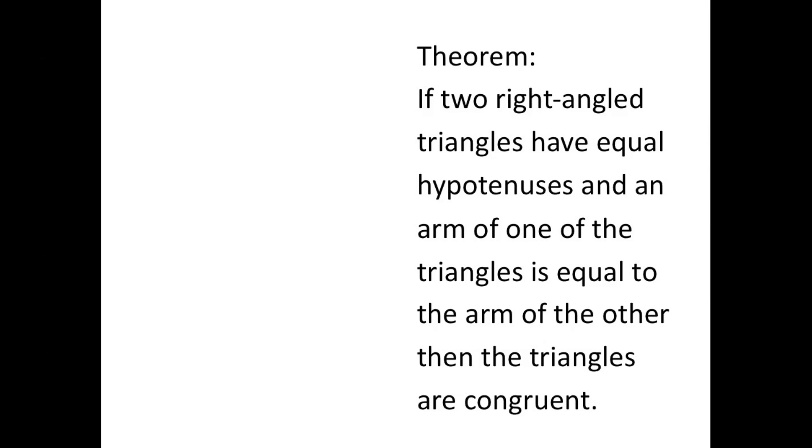So what this means is that we have these two right angle triangles and we know that their hypotenuses are equal plus we know that one of their sides are also equal. So this means that the two triangles are congruent and you can assume that they're congruent without even going through the trouble trying to measure the third side.